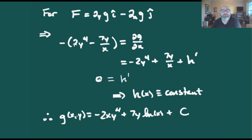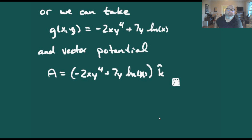For the second component, it has to be the negative of the partial with respect to x. Taking that partial of what we calculated gives us minus two y to the fourth plus seven y over x plus h'(x), and that should equal the negative of our second component, which is minus two y to the fourth plus seven y over x. Everything cancels, leaving h'(x) equal to zero, so h is just a constant. Therefore, our stream function g(x,y) equals minus two xy to the fourth plus seven y natural log of x, and our vector potential is that function in the z direction.